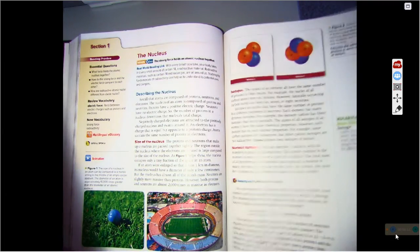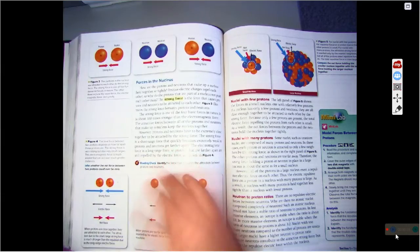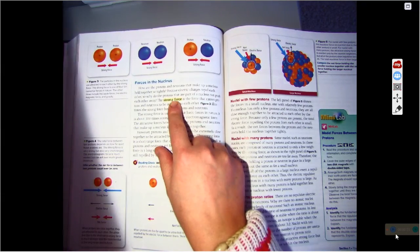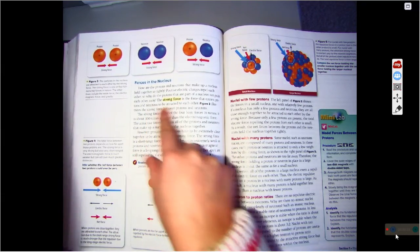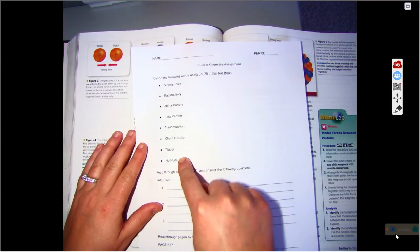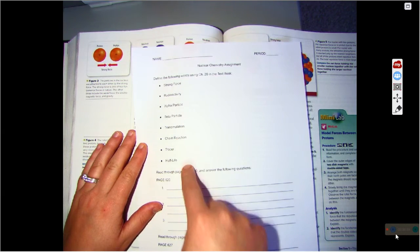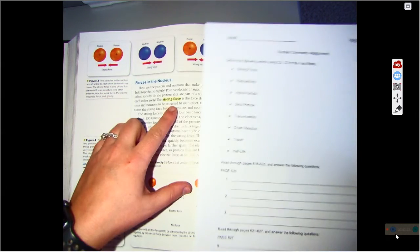So the first one is strong force and you'll notice that the first bold word will be strong force and it's highlighted. It's the force that causes protons and neutrons to be attracted to each other. So you're going to go through the chapter and answer those and define those using the highlighted words.